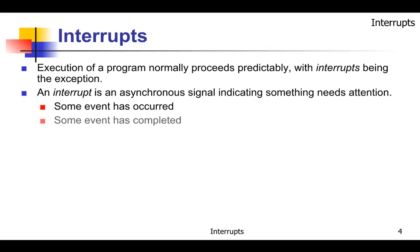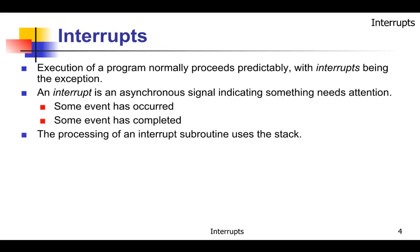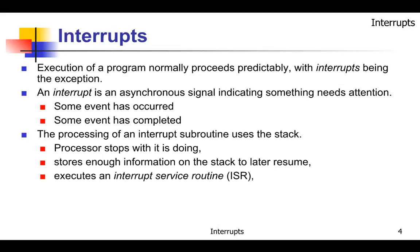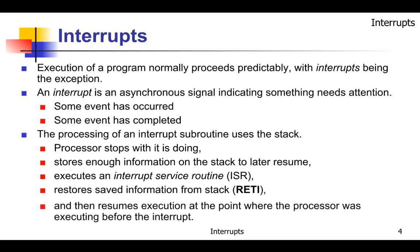Some event has occurred or some event has completed. The processing of an interrupt subroutine uses the stack to store variables so you can go back to work after the interrupt service routine. The processor stops what it's doing, stores enough information on the stack to resume later, executes the interrupt service routine, restores the saved information from the stack, hits the RETI instruction, and resumes execution at the point where it was before the interrupt occurred.